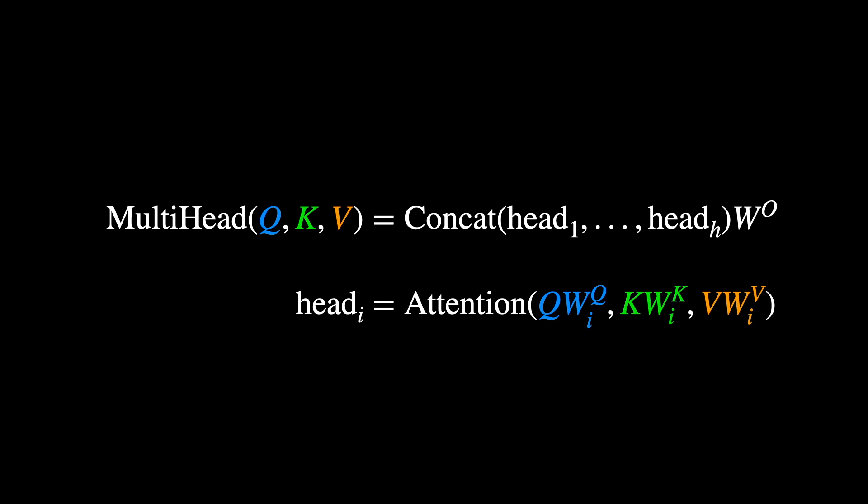Later, in the decoder, we'll see how Q, K, and V can come from different sources. The H output matrices are concatenated, and then multiplied with another weight matrix W_O, to linearly project the learned representations back to the original embedding dimensionality. In the paper, the value vector dimensionality is set to be equal to the embedding dimensionality divided by the number of heads, in which case W_O is a square matrix.